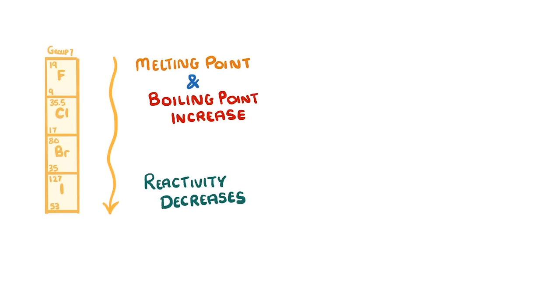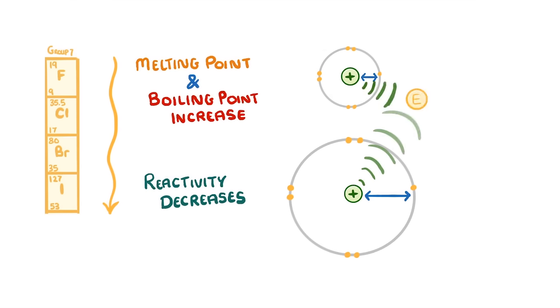This decrease in reactivity is because as you go down the group, the outermost shell gets further and further away from the positive nucleus. So the attractive force that's needed to pull in an extra electron from another atom gets weaker. And if the halogen can't attract an electron to complete its outer shell, then it can't react. So the larger atoms at the bottom of the table, like iodine, are the least reactive.